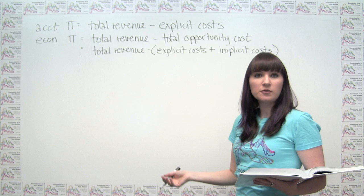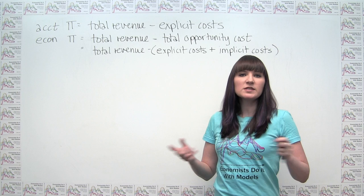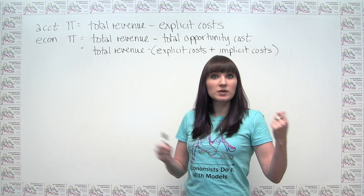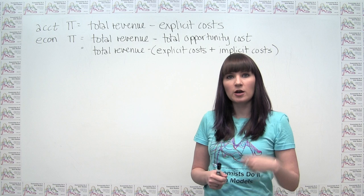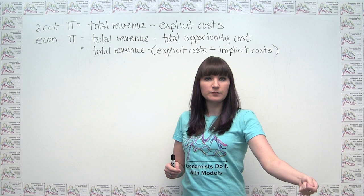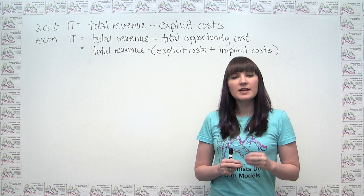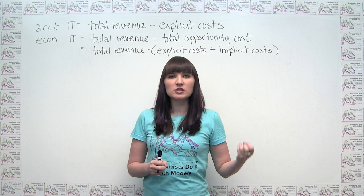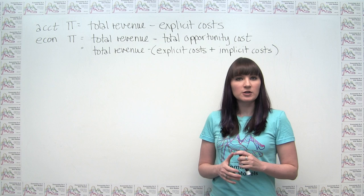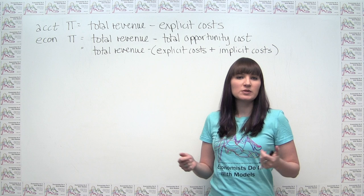So the next step is to understand what an implicit cost is. Explicit costs are the ones we're used to thinking about — those things that we're explicitly writing a check for, literally paying out money. Implicit costs, on the other hand, are costs that don't involve a literal paying out of money, but are still costs in that they represent foregone opportunities or foregone situations where I could have earned money. As we go through the costs incurred by Jared's business, the distinction between explicit and implicit costs becomes clearer with examples.